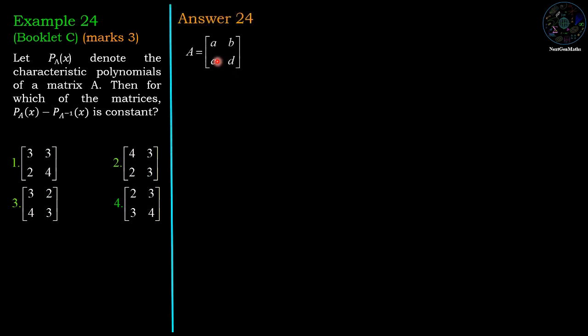So first we begin with the generalized matrix A equal to [[a, b], [c, d]] and its characteristic polynomial P_A(x) is equal to determinant of (xI minus A). So determinant [[x minus a, minus b], [minus c, x minus d]], then x squared minus (a plus d)x plus ad minus bc.